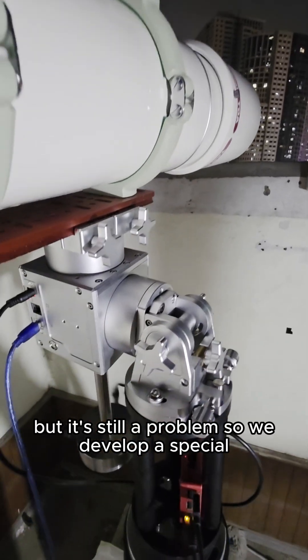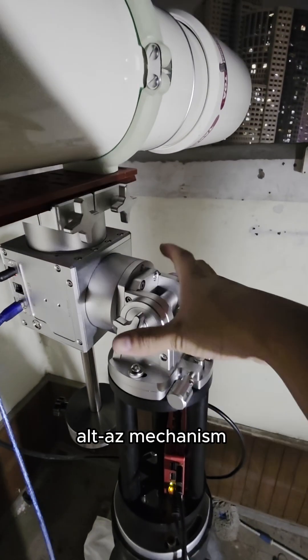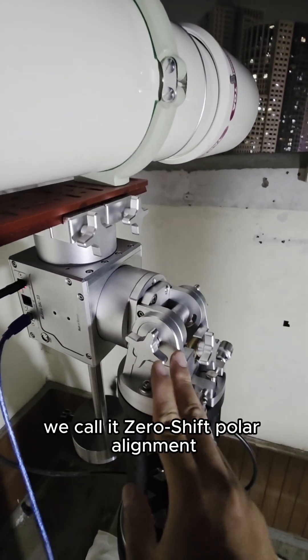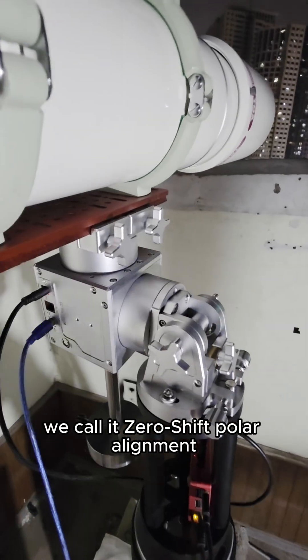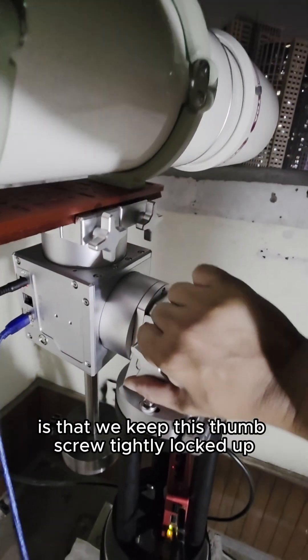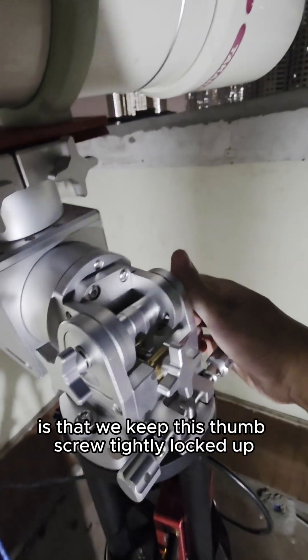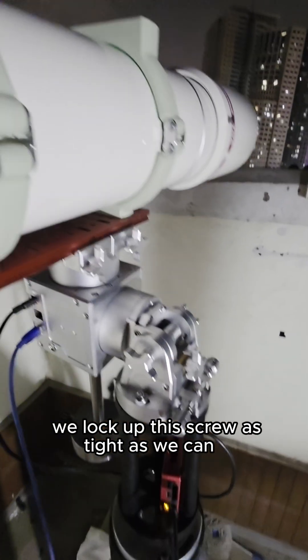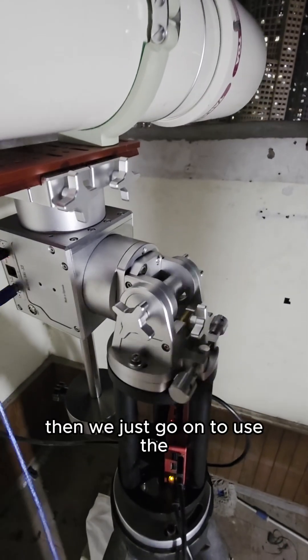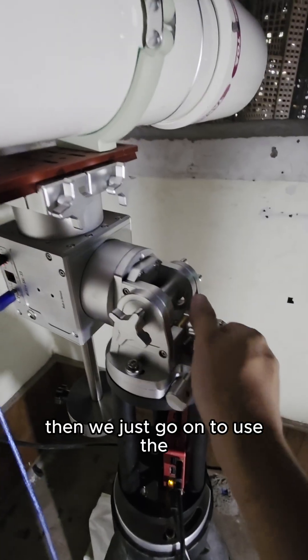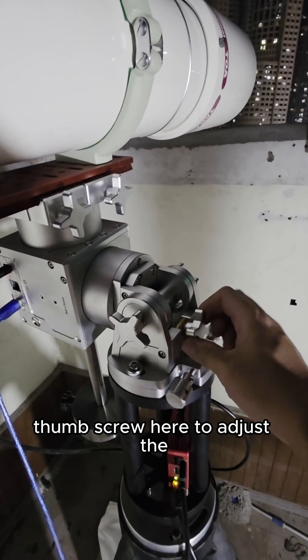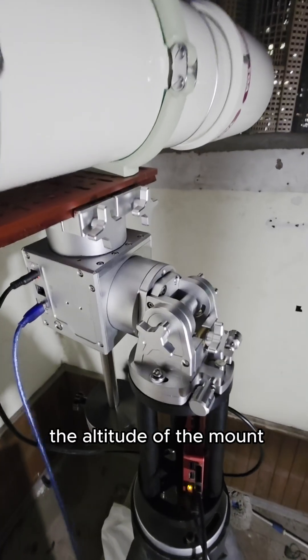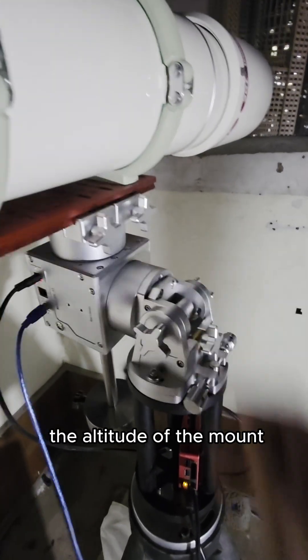So we did develop a special ALS mechanism. We call it zero shift. For the polar alignment we keep these thumb screws tightly locked up. We lock up this screw as tight as we can. Then we just go on to use the thumb screw here to adjust the altitude of the mount.